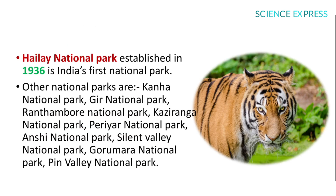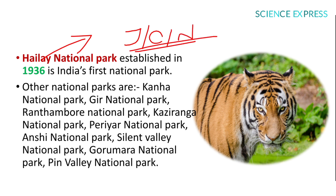India's first national park is Hailey National Park, now known as Jim Corbett National Park, located in Uttarakhand, established in 1936. Other national parks include Kanha in Madhya Pradesh and Gir in Gujarat, famous for the Asiatic Lion.